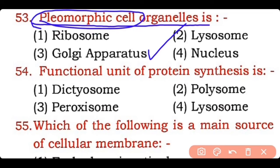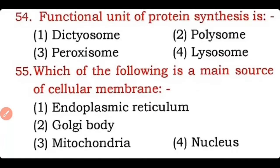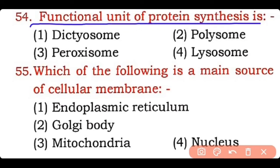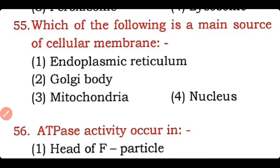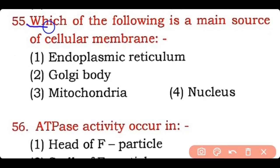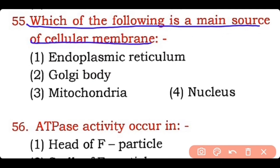Question 54: The functional unit of protein synthesis is — dictyosome, polysome, peroxisome, or lysosome? Correct answer is option two — the functional unit of protein synthesis is the polysome, which consists of messenger RNA attached to ribosomes. Question 55: Which of the following is the main source of cellular membrane — endoplasmic reticulum, Golgi body, mitochondria, or nucleus? Correct answer is option one — endoplasmic reticulum is the main source of cellular membrane within the cell.